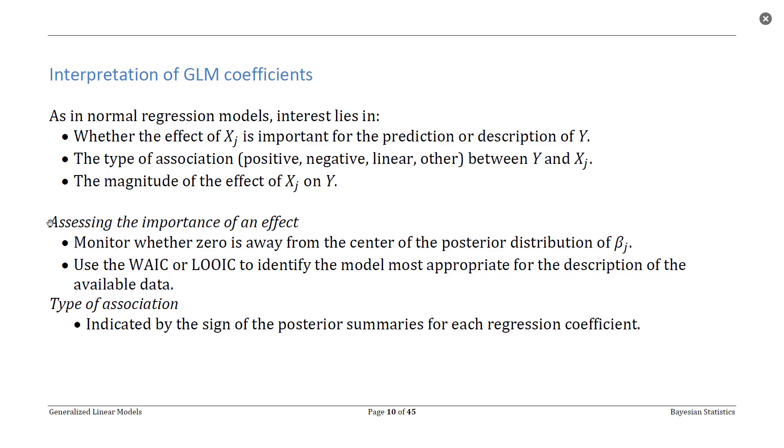So once we've decided what variables should be in the model, then naturally we want to know the type of association. So is the relationship typically positive, negative, or something else? And this is really just indicated by the sign of our posterior summaries for each regression coefficient.